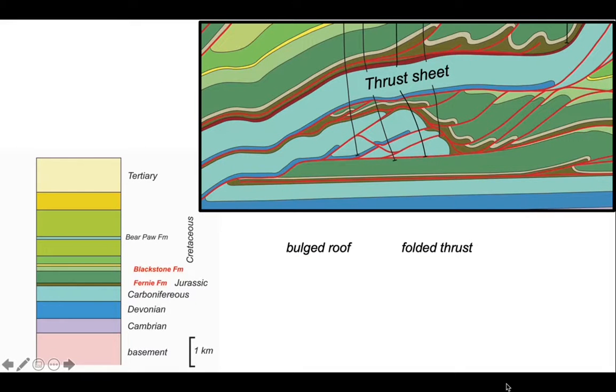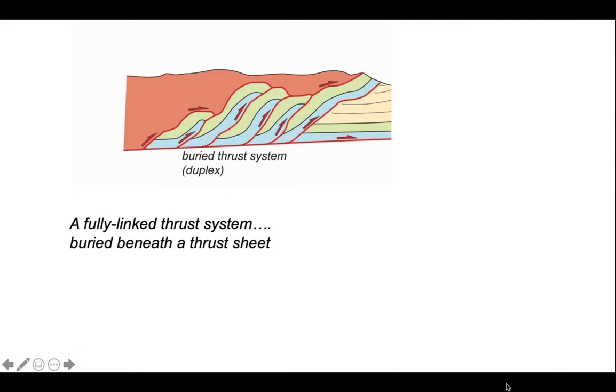We can identify this again in our Alberta cross section. We can see a bulged roof thrust and folded thrusts. So in fact some of these thrusts are tipped up so they were going downhill, or apparently downhill. They've been folded so they're downward facing. So that's a fully linked thrust system developed beneath a thrust sheet. The thrusts detach from a floor thrust and then recombine at a roof.